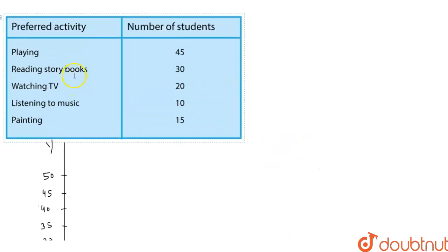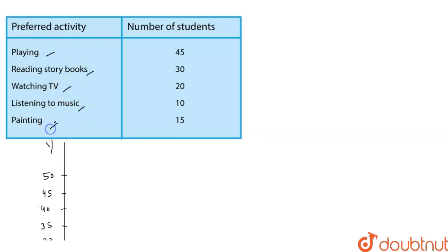Now we also draw the x-axis, on which we take the preferred activity. There are five preferred activities: playing, reading storybooks, watching TV, listening to music, and painting.